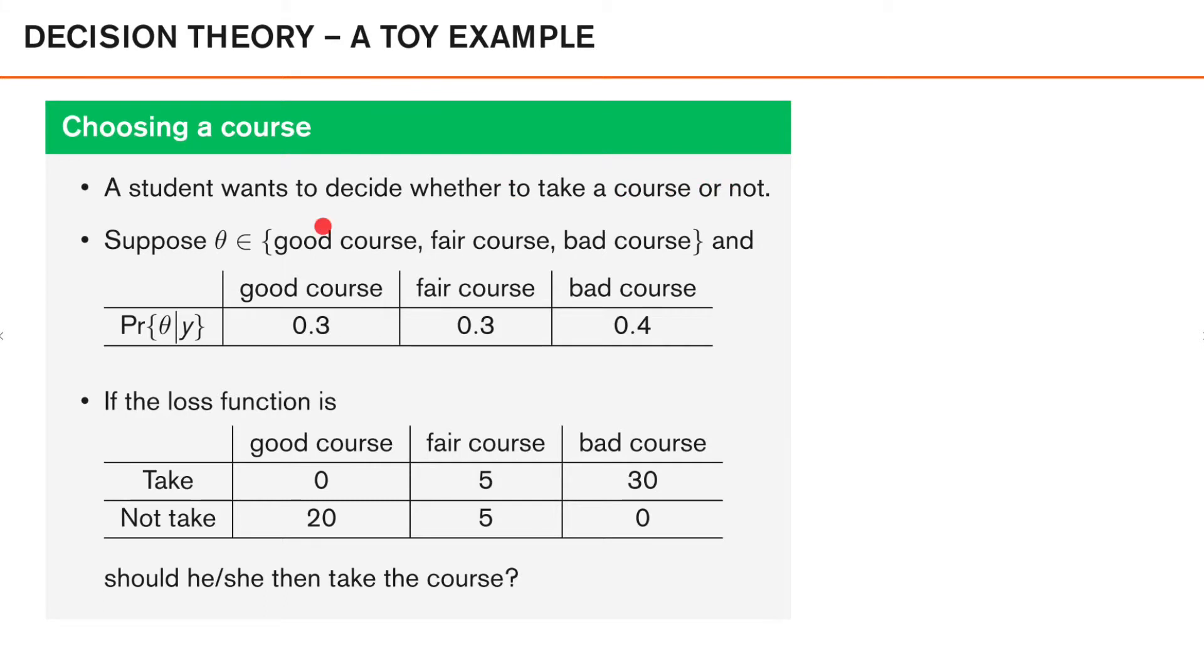In this example, let's suppose that we have some posterior distribution of the quality of the course, having spoken to other students who have taken the course, for instance, and taking our prior knowledge about the topic into account. Based on this, we find that the probability that the course is good is 0.3, that the course is fair is also 0.3, and that the course is bad is 0.4.